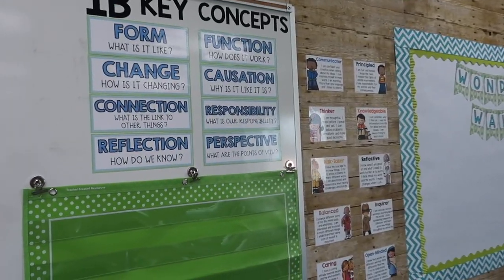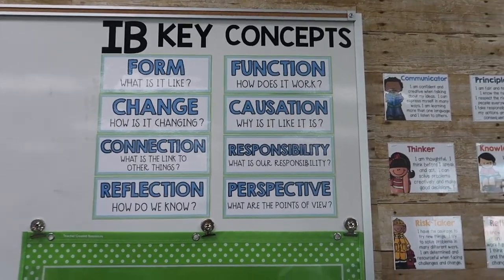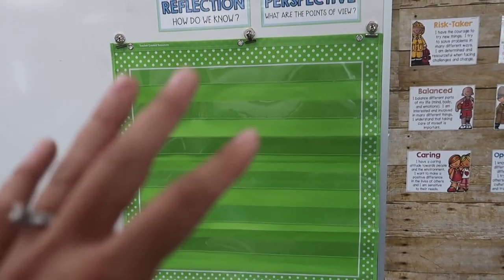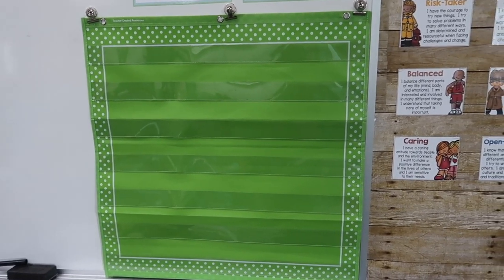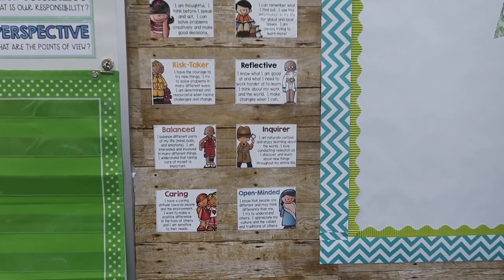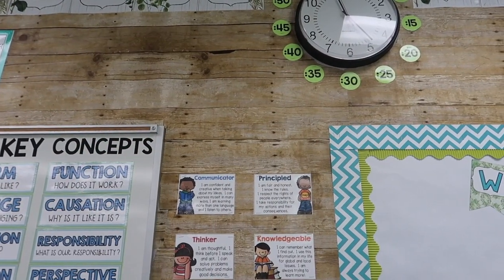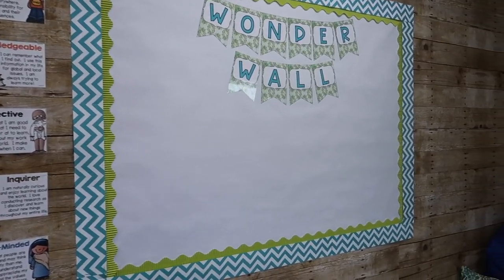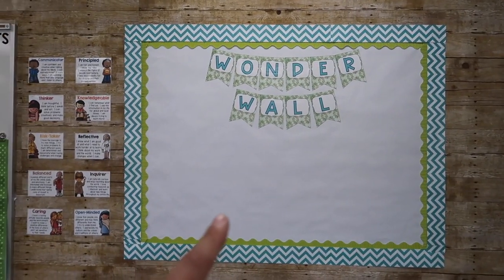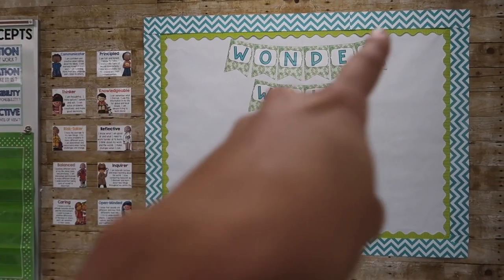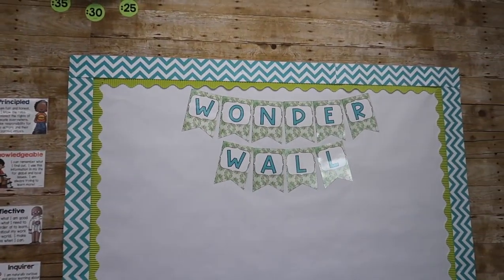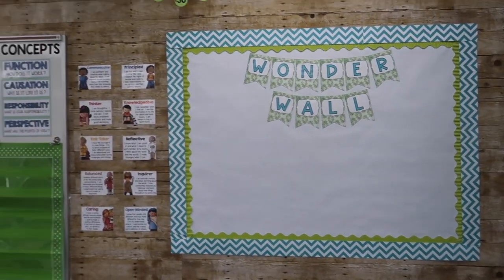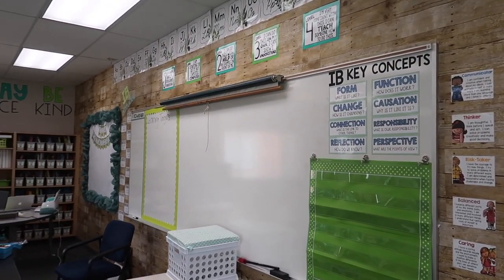I hung up my IB key concepts — just an IB thing I created on PowerPoint. This pocket chart is going to be for our IB unit. And this is our IB learner profiles — I have a title I'm going to hang today. I also created my Wonderwall again, another IB requirement. I used white paper with a green border and then went over it with a teal chevron border. I got a lot done yesterday — I was here for literally six hours.